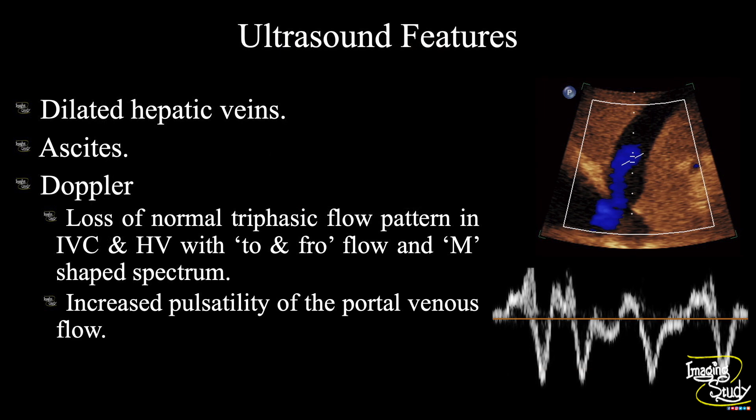In summary, we have seen dilated hepatic veins as well as the inferior vena cava, and there is peritoneal collection or ascites. With spectral Doppler, we have seen the loss of normal triphasic flow pattern in the inferior vena cava and hepatic veins, with to-and-fro flow and M-shaped spectrum. There is also increased pulsatility of the portal venous flow. These features conclude it as a case of passive hepatic congestion due to right heart failure.